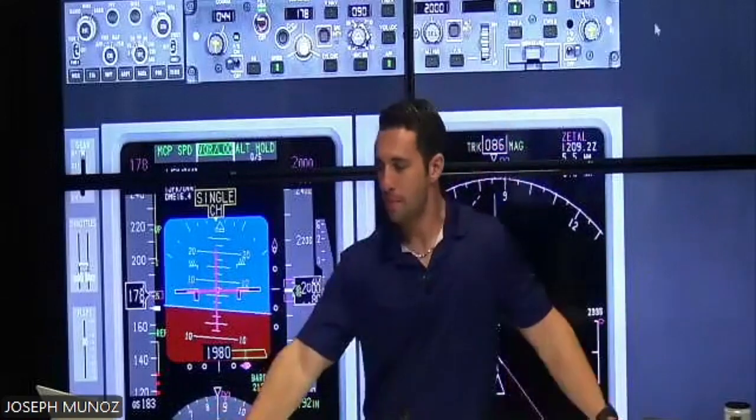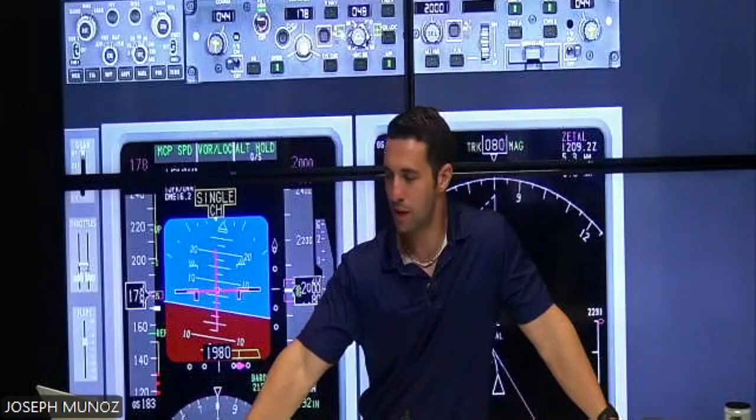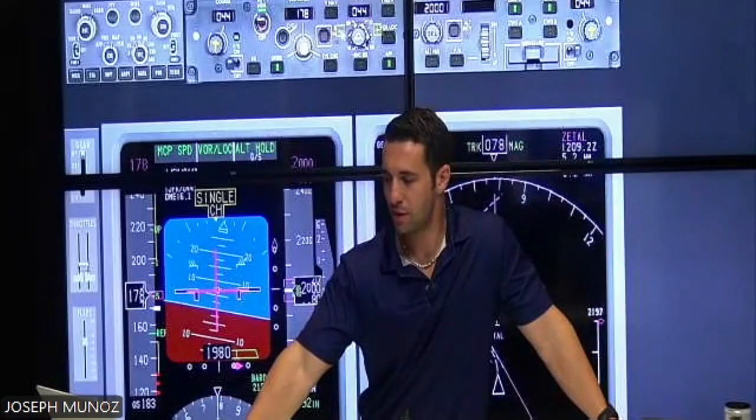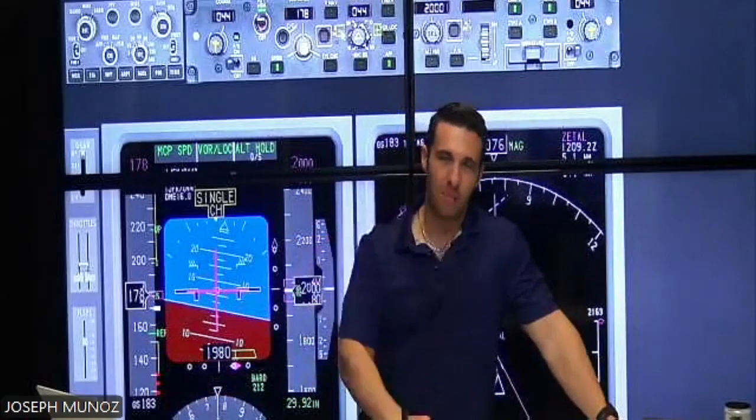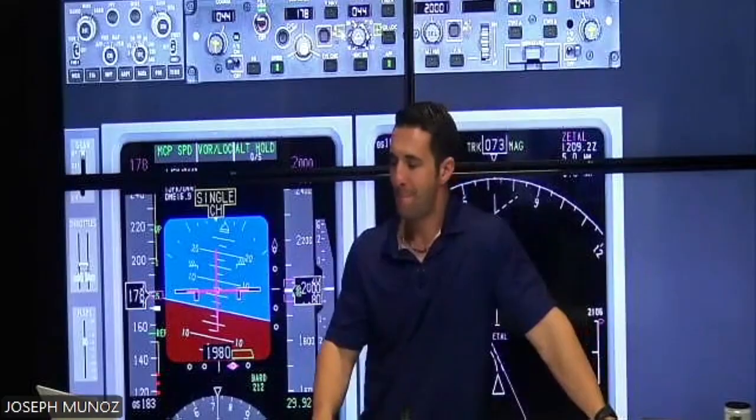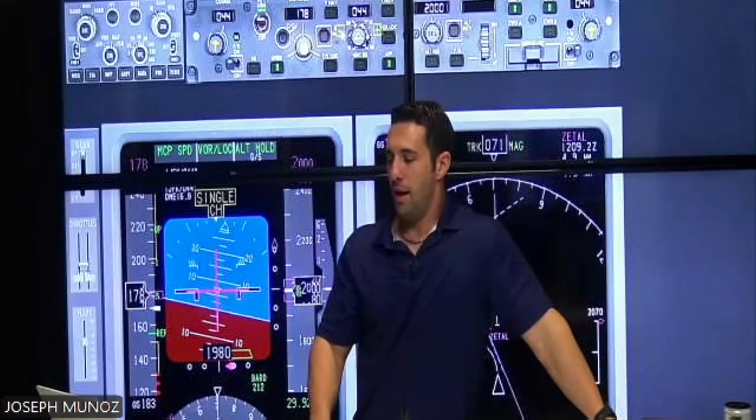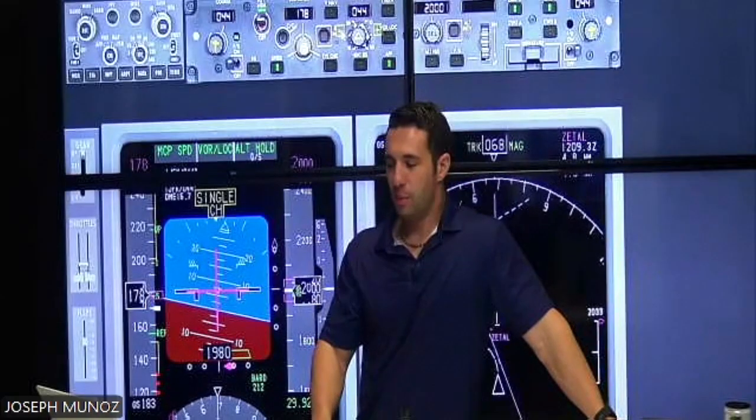There's Vorlo capture. Heading to course is the call. So I'm going to take my heading bug on the MCP that you can see, and I'm going to rotate it to the inbound course. Airplane's turning to capture the localizer now. And the next thing I'm looking for is glide slope alive.